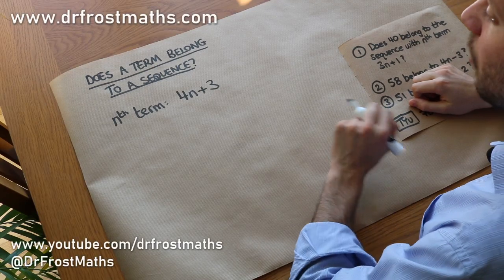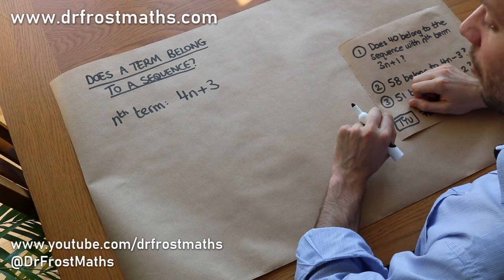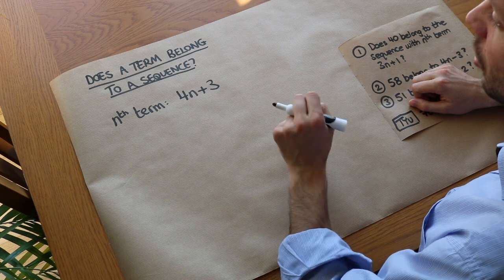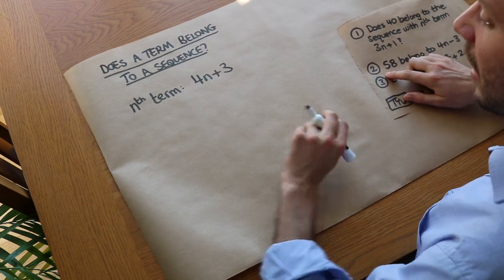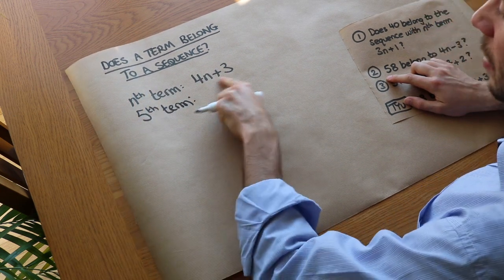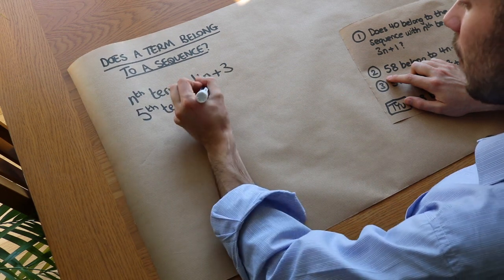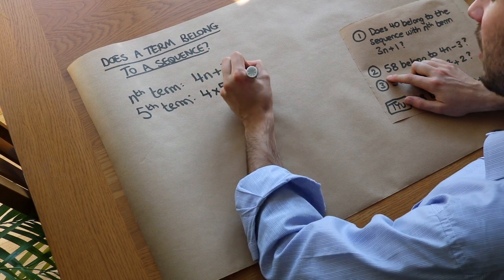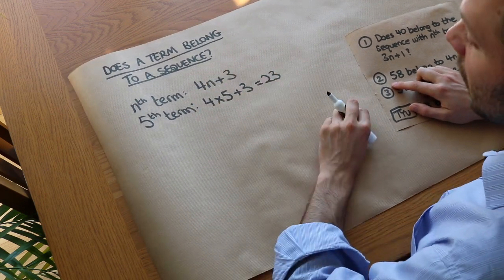Hello and welcome to this video on determining whether a term belongs to a sequence. In the previous video, we saw how we could use an nth term formula like 4n plus 3 to work out a particular term in the sequence. So if we wanted the fifth term, with n equal to 5, we'd do 4 times 5 plus 3, which equals 23. So the fifth term of this sequence is 23.